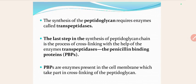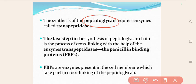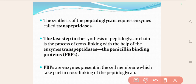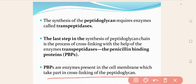The synthesis of peptidoglycan requires the enzyme transpeptidase. The last step in the synthesis of the peptidoglycan chain is the process of cross-linking. The penicillin binding protein, also called transpeptidase, is an enzyme present in the cell membrane which takes part in the cross-linking of the peptidoglycan.